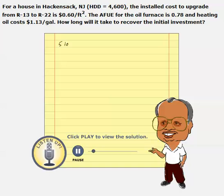The payback period for adding insulation is: cost of insulation times R1 times R2 times efficiency, divided by cost of energy times the difference in R value, times HDD times 24. That is the formula that we need to use.